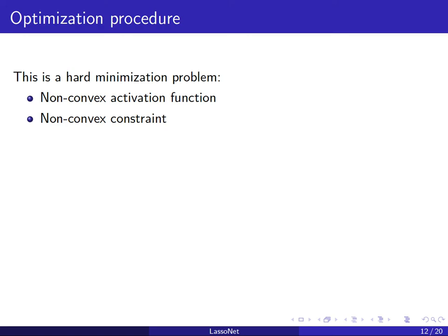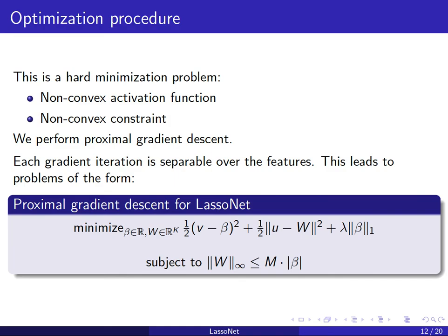The problem as stated is not easy to optimize. It's one thing to define an optimization problem that seems to achieve your purpose and another to solve it. The original problem uses a non-convex activation function, which is standard for neural networks. On top of that I've introduced an additional non-convex constraint. However, our approach — performing a constrained gradient descent using a proximal algorithm — is still tractable. I don't claim to achieve a global minimum, but in terms of performing gradient steps we can use this proximal algorithm.